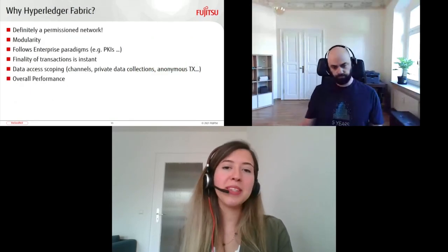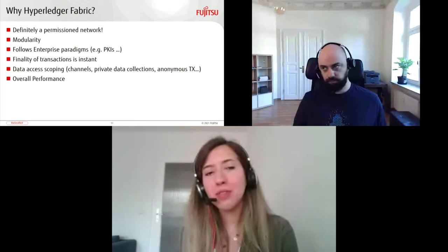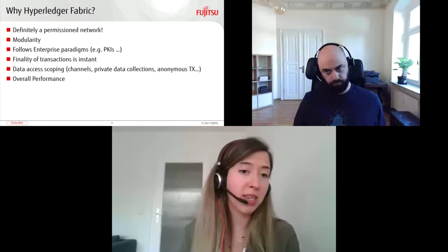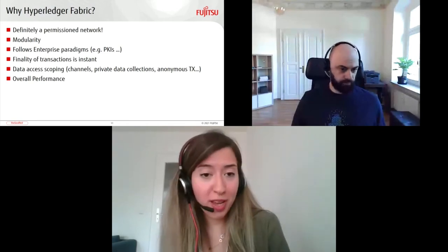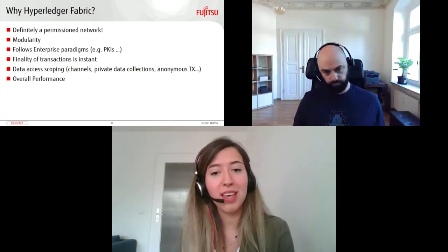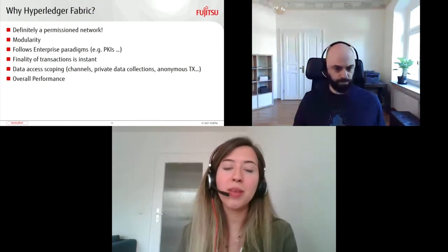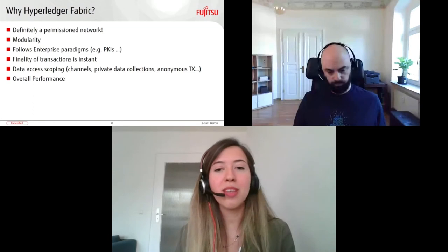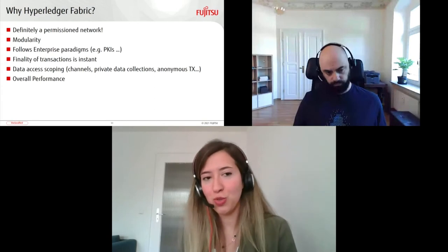Hyperledger Fabric matches perfectly with our project's requirements. We definitely needed a permissioned network. Fabric offers modular architecture, maximizing flexibility and resilience of our solution. Fabric follows enterprise paradigms, meeting modern business demands. Finality of transactions is not an issue as they are instant. Fabric offers features like channels, transaction anonymity, and data access scoping — privacy regarding who can access which sets of data — so we do not have to implement this from scratch. And it certainly meets our project's expectations regarding overall performance.